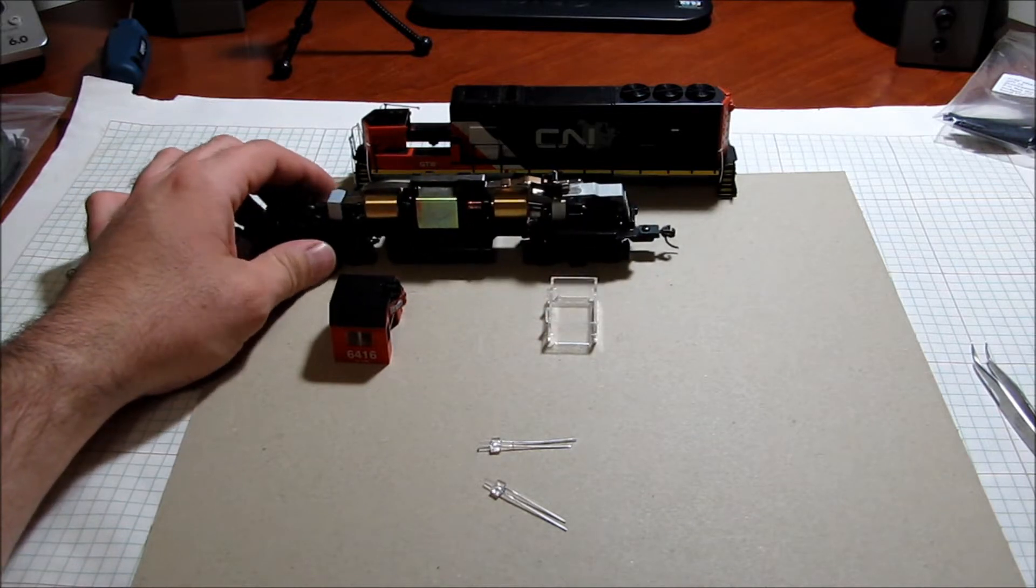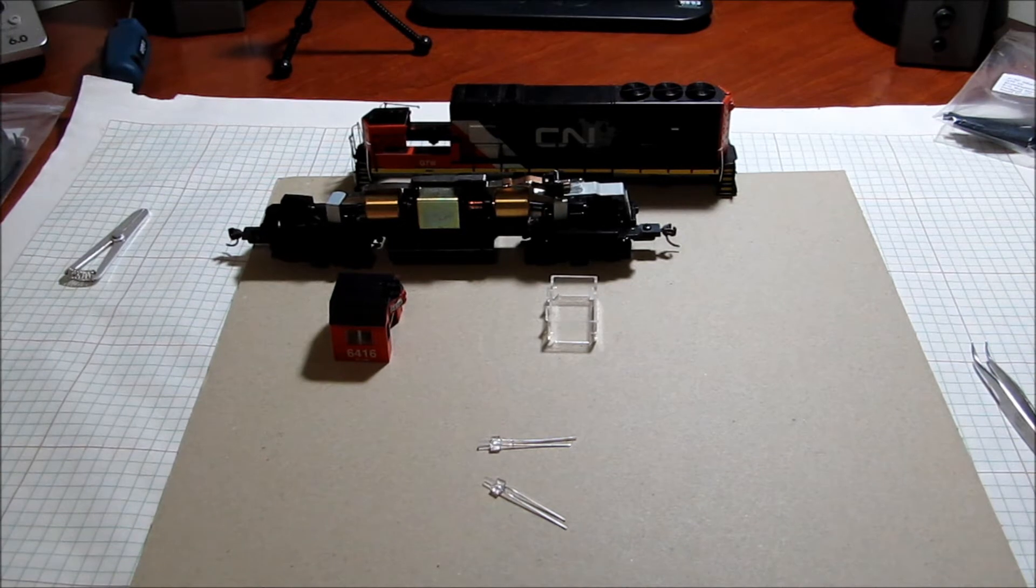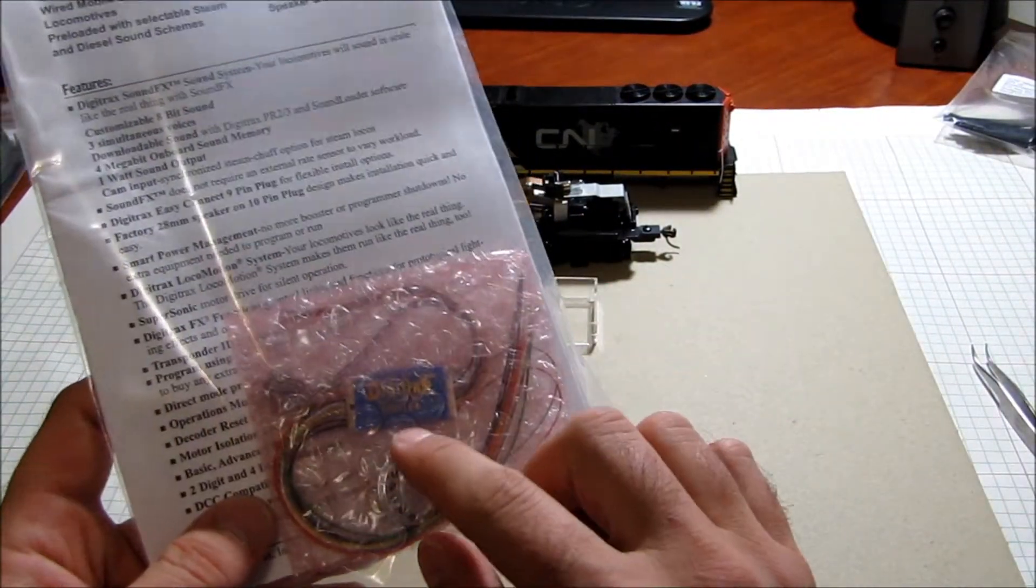Part B is probably going to be the installation of converting it to DCC. The reason why I'm making that Part B is because something I learned was this speaker that comes with the SDH 164D is obviously too big to fit in the shell when put together.